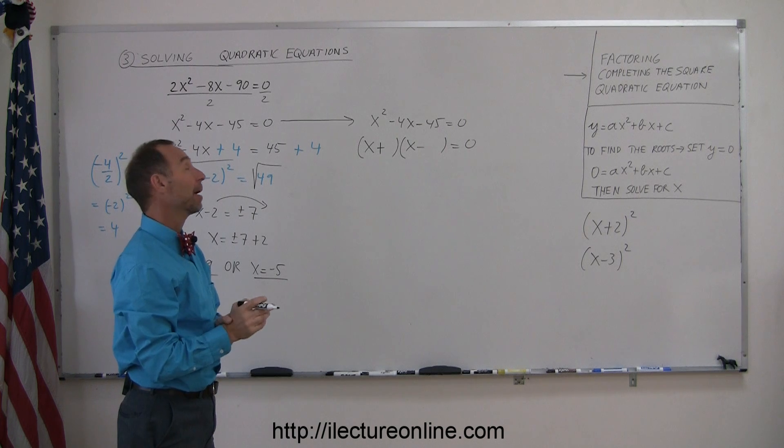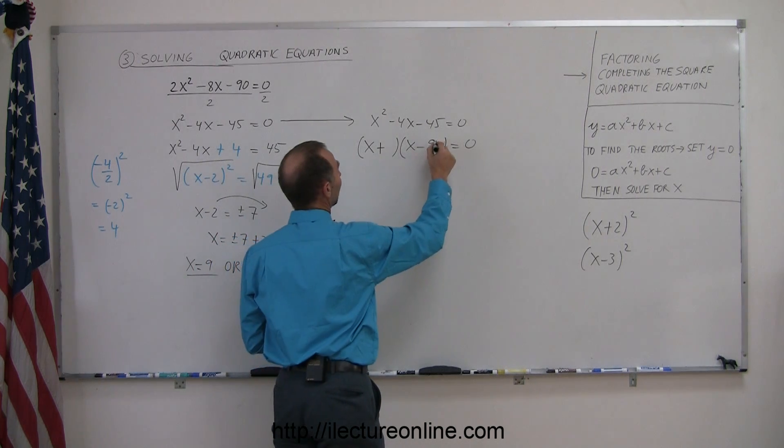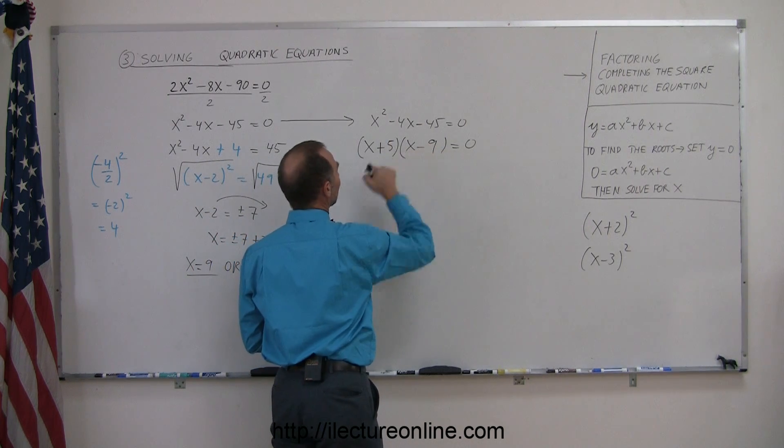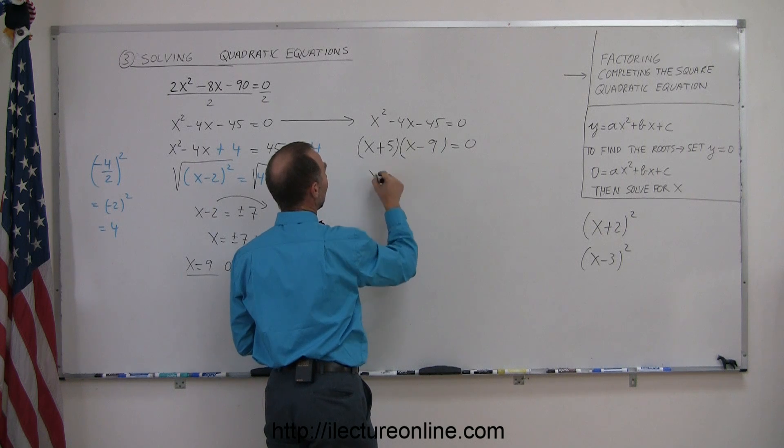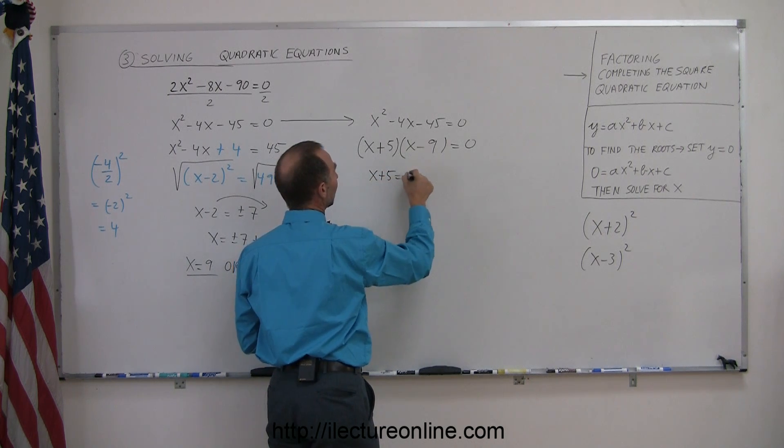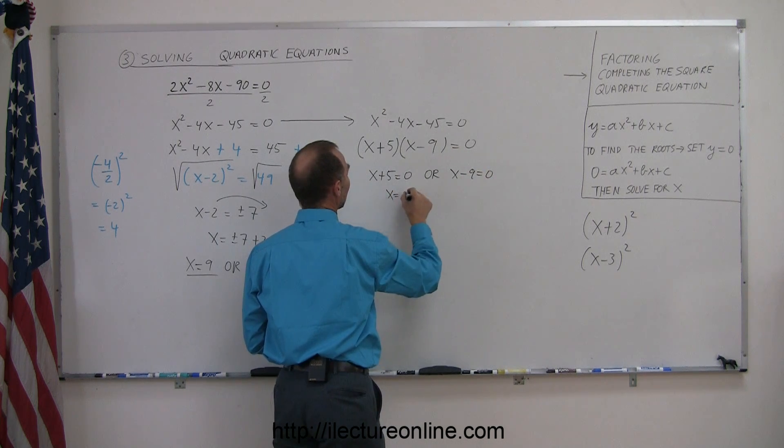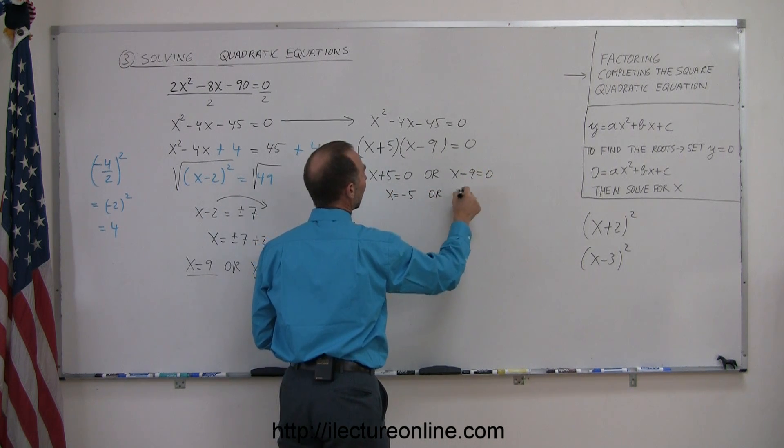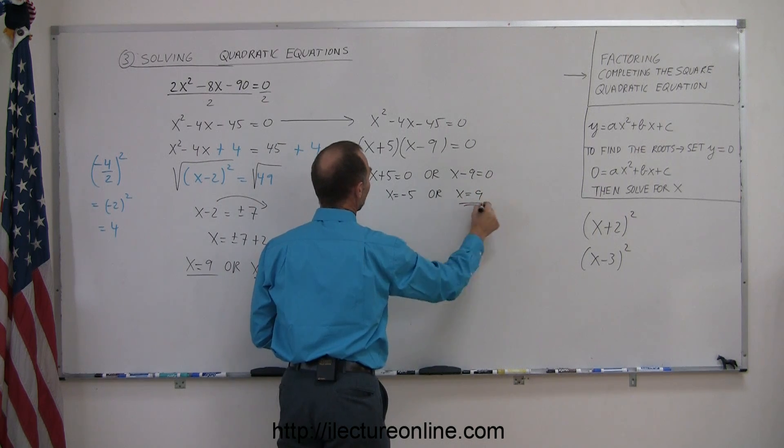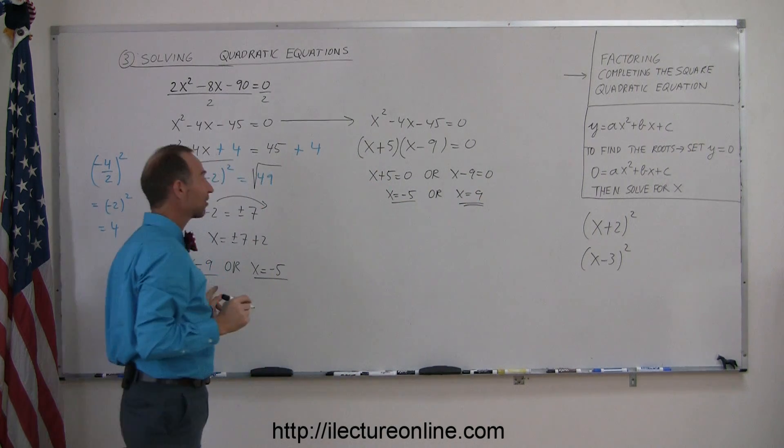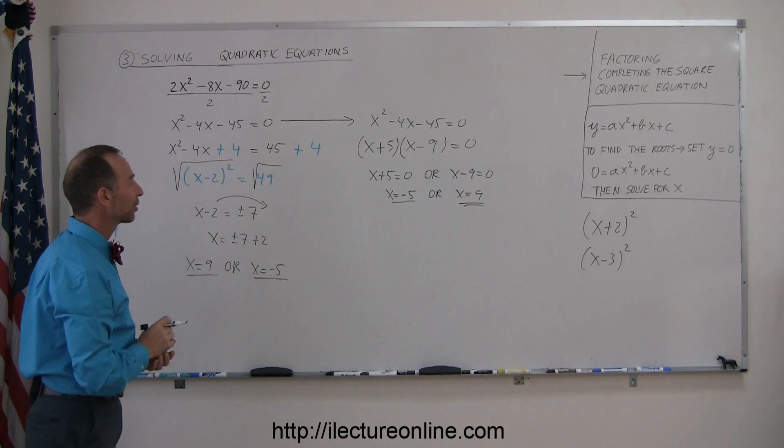How about minus 9 and positive 5? That works. So x plus 5 equals 0, or x minus 9 equals 0, which means x equals minus 5, or x equals positive 9. That's exactly what we got before, so we know we did it correctly.